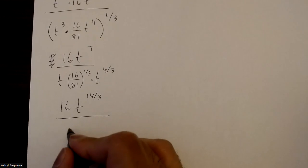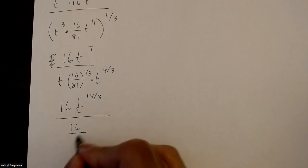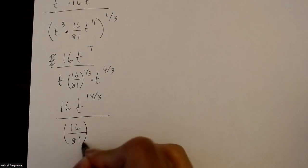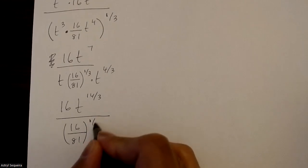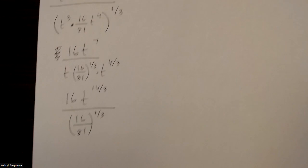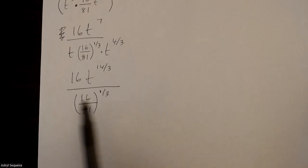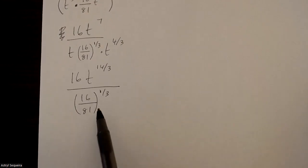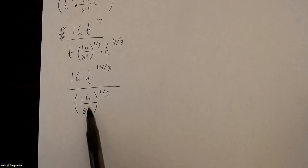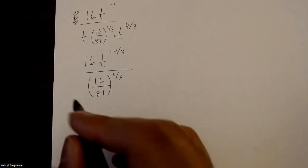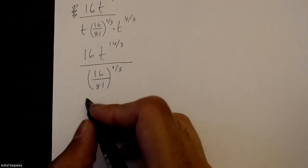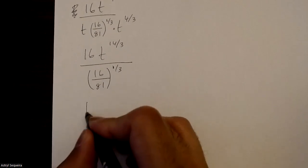And I just have 16 over 81 to the power of 1 over 3 in the bottom. Now you could leave this as a final solution, but there is a different way to simplify it as well if you don't want to have a fraction in the denominator. So I'll show those extra steps as well.